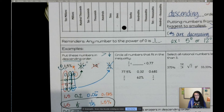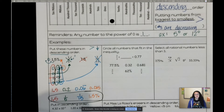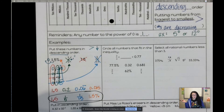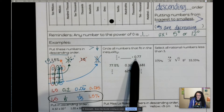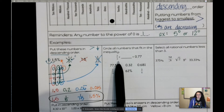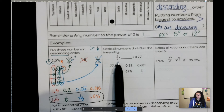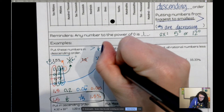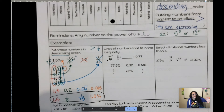The next problem says to circle all numbers that fit in the inequality. We need to compare two numbers, so the first thing to do is turn them all into decimals. Two-thirds as a decimal is 0.6 repeating — that's 0.666666... forever. Pause the video and try converting the six given numbers to decimals on your own.